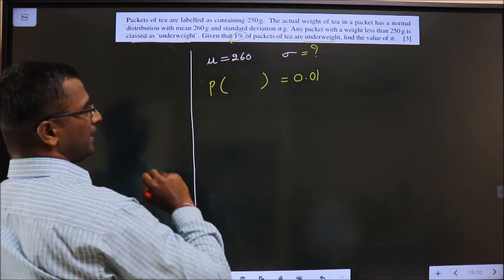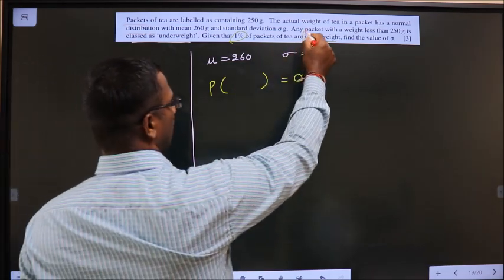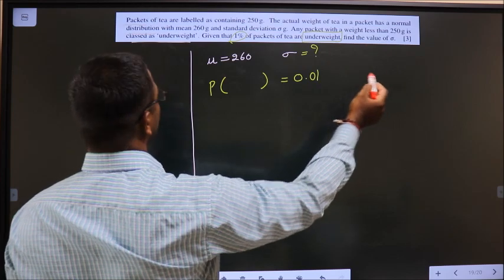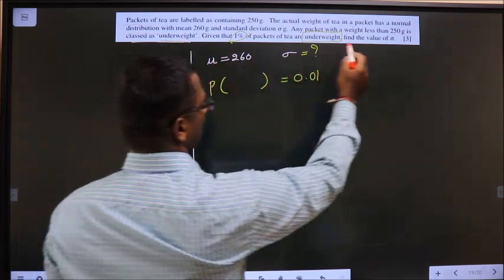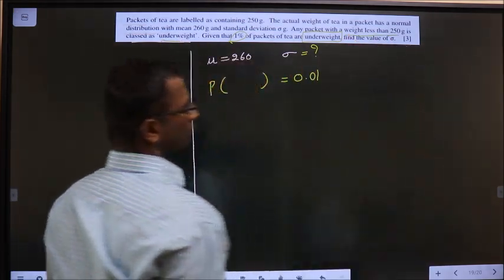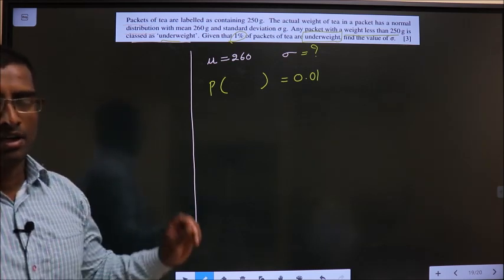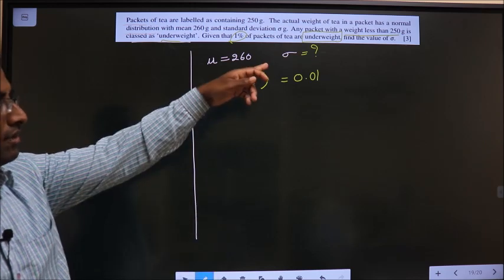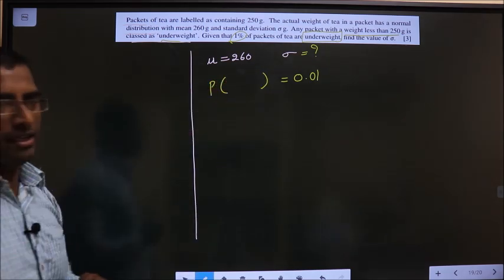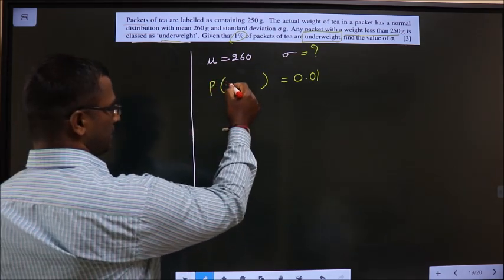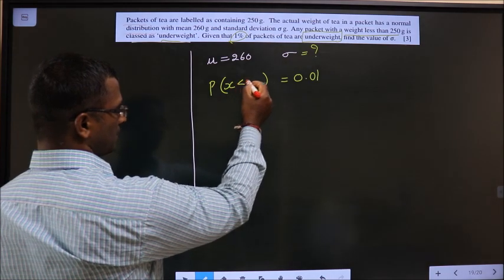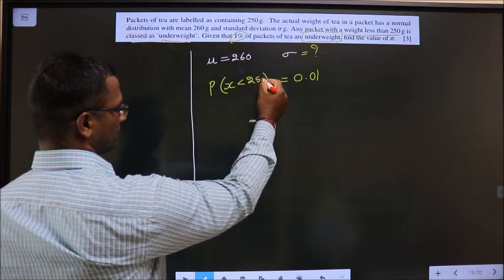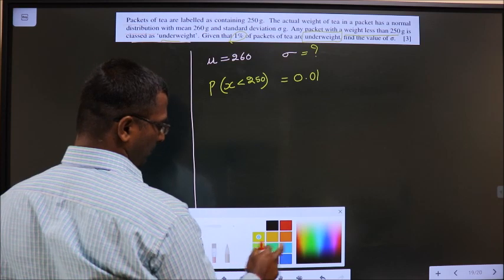Now what condition will I write? When do I say it is underweight? Whenever the weight is less than 250 grams. On what basis do I say it is underweight? When the weight is less than 250 grams, so put less than symbol 250.